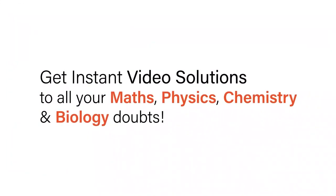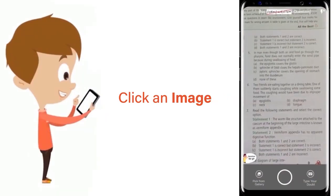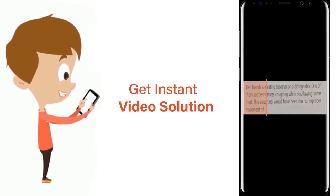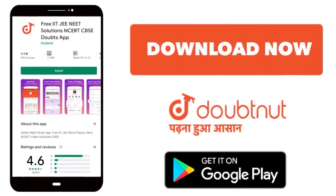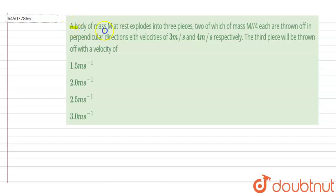With Doubtnet, get instant video solutions to all your math, physics, chemistry and biology doubts. Just click the image of the question, crop the question and get instant video solution. Download Doubtnet app today. Hello, a body of mass m is exploded into three pieces.